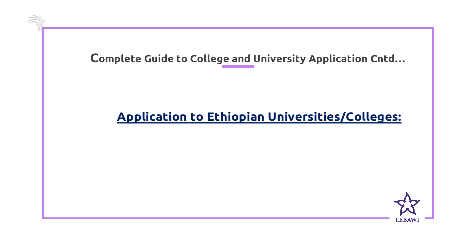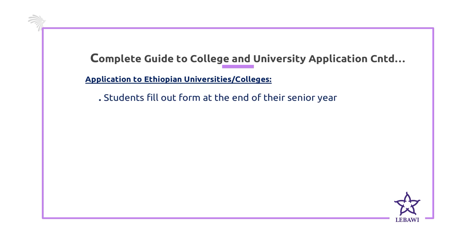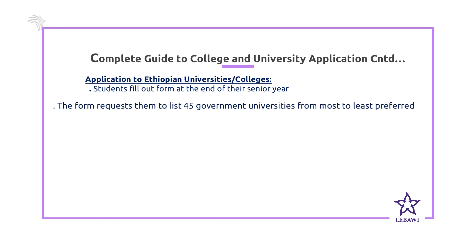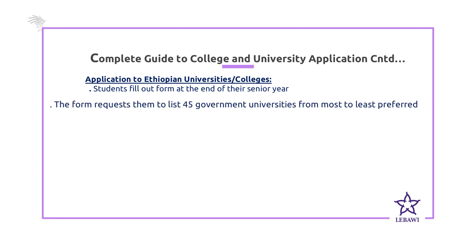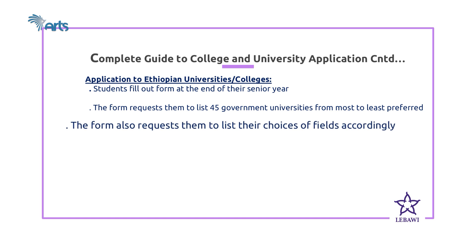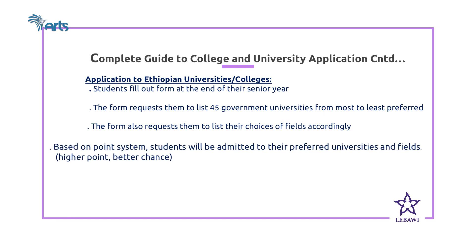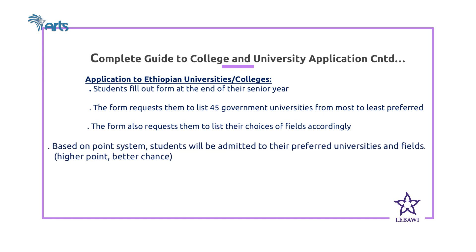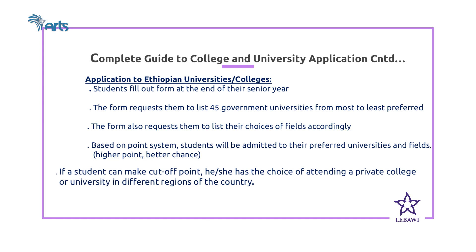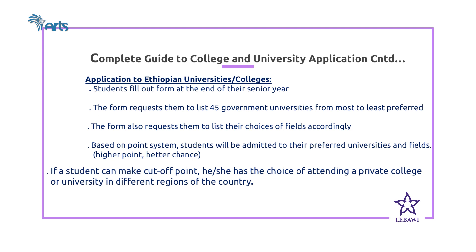For the Ethiopian university application process, students need to fill out a form by the end of their senior year. The form requires them to list 45 governmental universities from most to least preferred, along with their choices of fields. Based on a point system, students are admitted to their preferred universities and fields — higher points mean a better chance. If a student cannot make the cut-off point, they have the choice of attending a private college or university in different parts of the region.